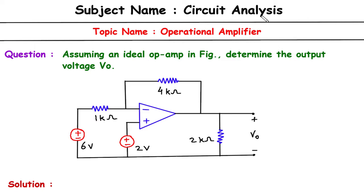Subject name: circuit analysis. Topic name: operational amplifier. Assuming an ideal op-amp in the figure, determine the output voltage Vo.